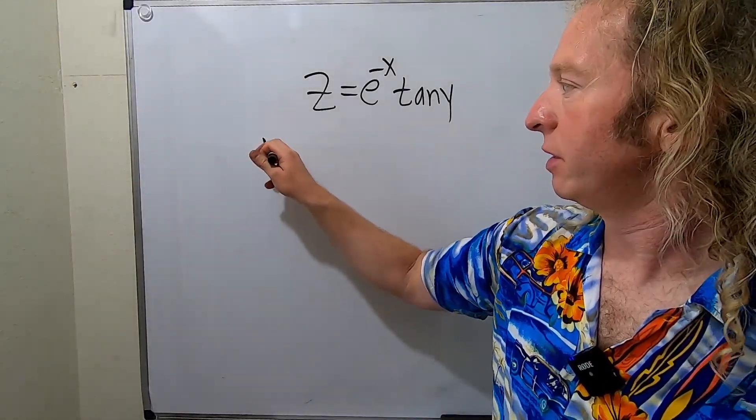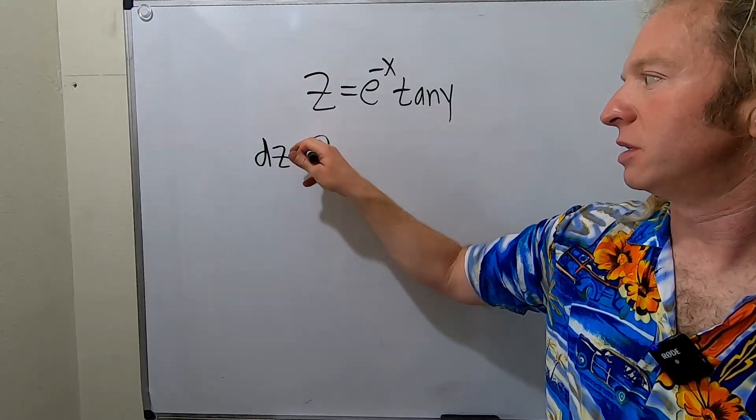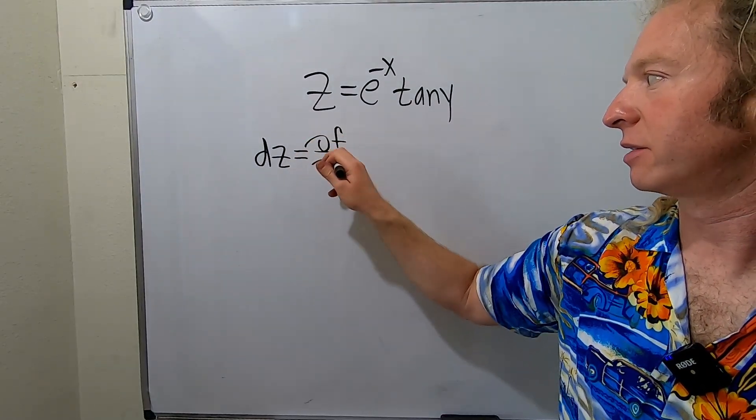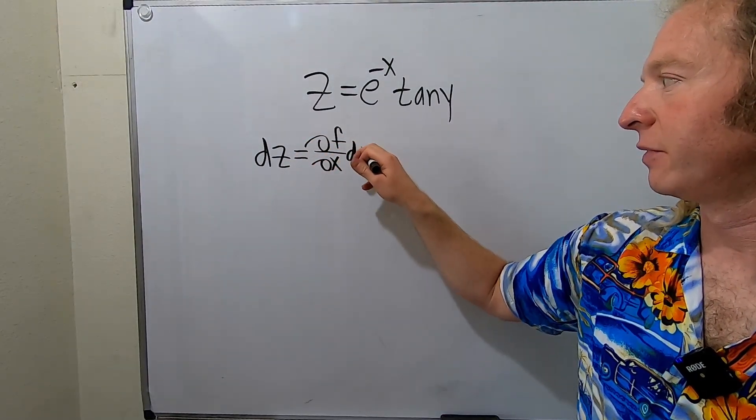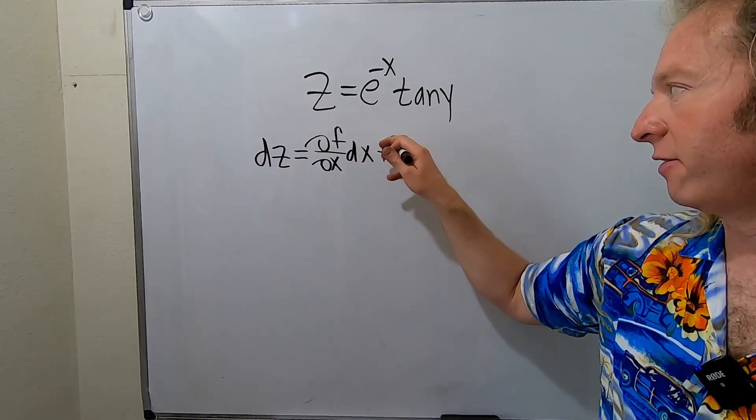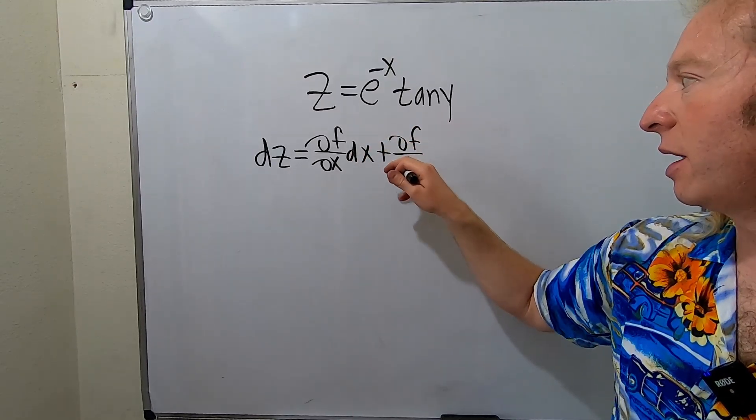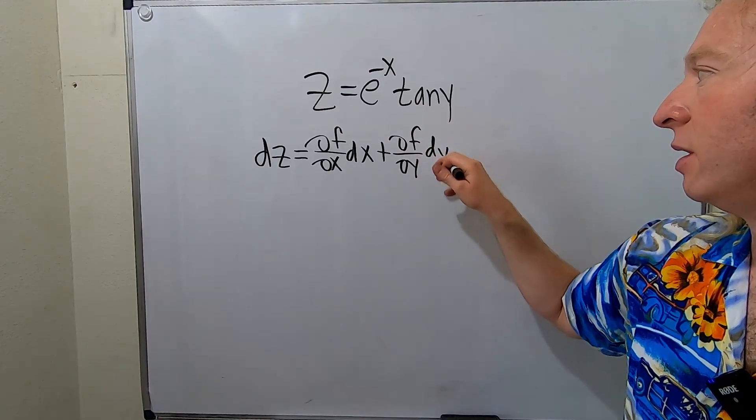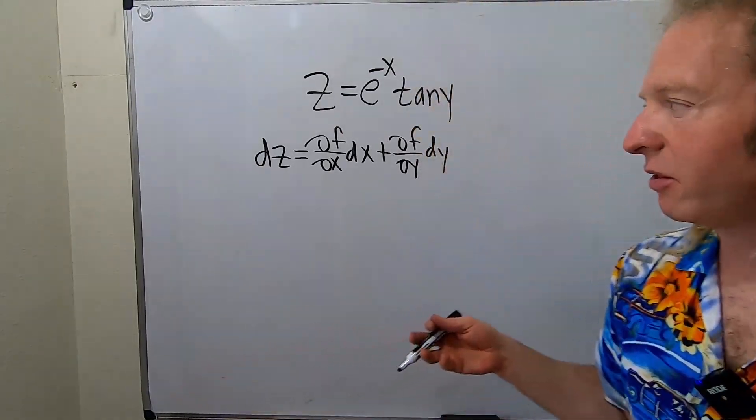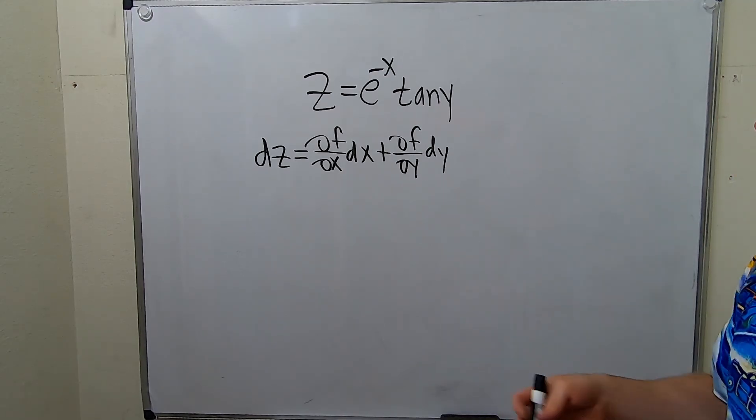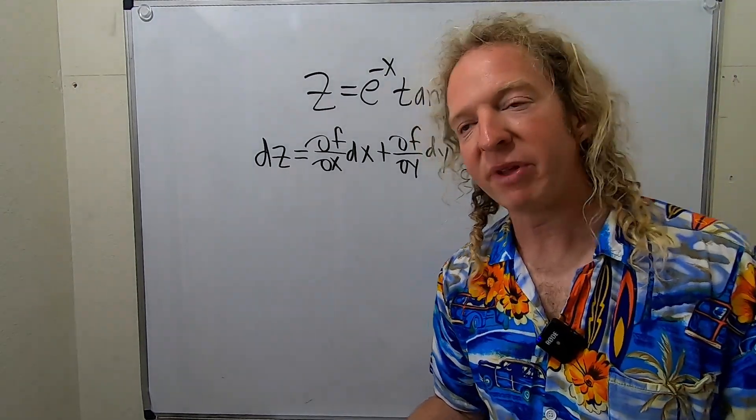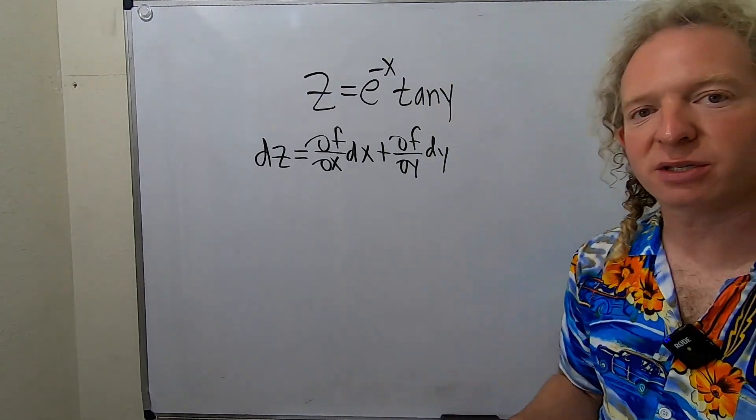The total differential is dz equals ∂f/∂x dx plus ∂f/∂y dy. And so what is this for? It's used for various things in math. Use it in differential equations when you're solving exact differential equations, it's used for approximations, etc.